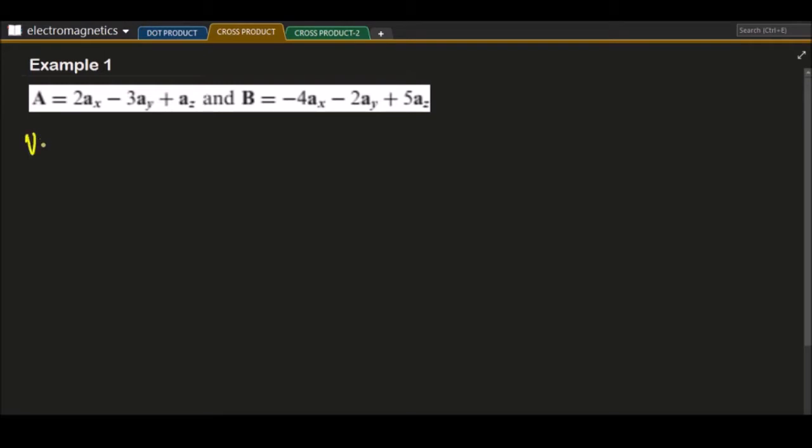Let's put here a note. Our i is just the same with a sub x, j is the same with a sub y, and k is the same with a sub z. That is just a matter of designation. It's only the book will use this type of designation.